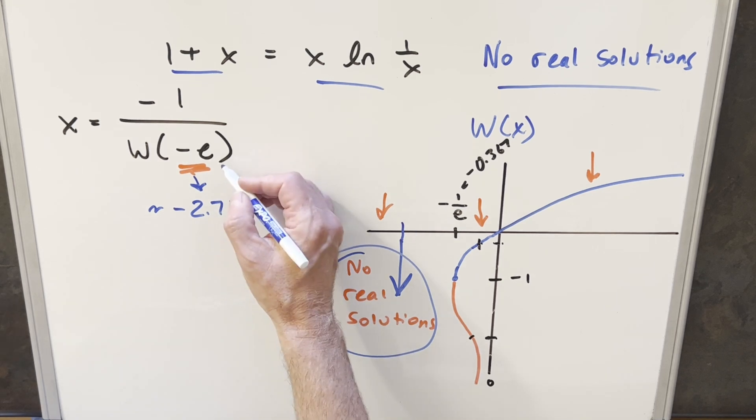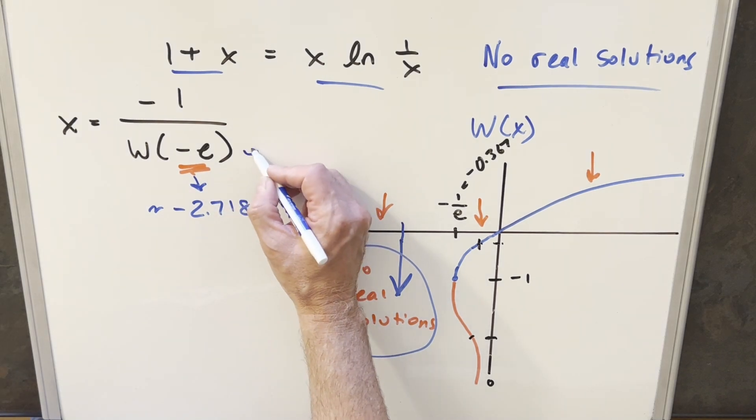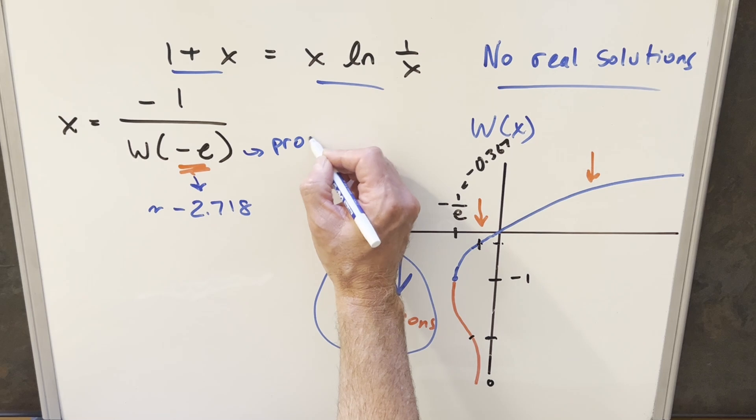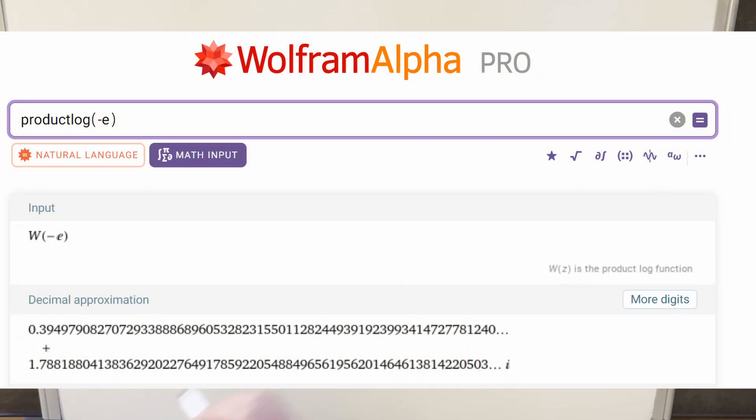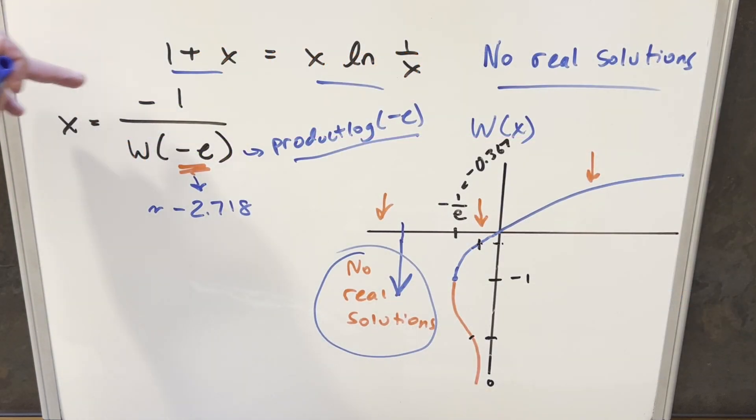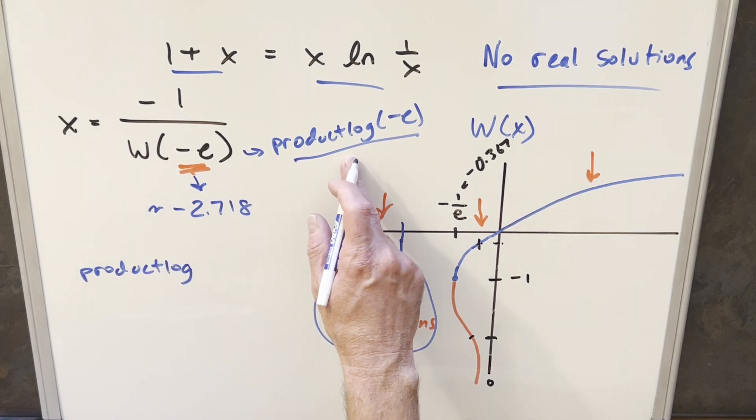One thing you could do, you can get a value for this, right? You could put in Wolfram Alpha, you could enter this as just product log of minus e. And this will give you a complex solution. Of course, it's going to be in the denominator minus one. So you'll have to do another step to get an x value. But there's actually going to be an infinite number of these, because you can also enter in all these different branches. So in Wolfram Alpha, if you just enter product log, this is going to assume the branch is going to be zero.